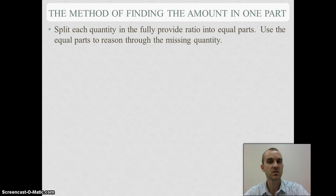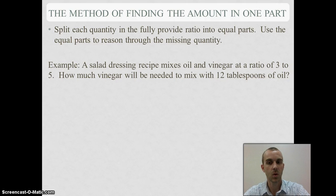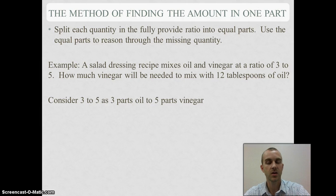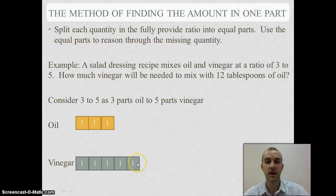Another method I could use is where I'm going to use equal parts to try to reason through the problem. I have a salad dressing recipe that calls for oil and vinegar at a ratio of 3 to 5. I want to know how much vinegar will I need for 12 tablespoons of oil. Since it's 3 to 5, I know that's 3 parts oil and 5 parts vinegar, so I could literally make them look like parts: 1, 2, 3 for oil and 1, 2, 3, 4, 5 for vinegar.